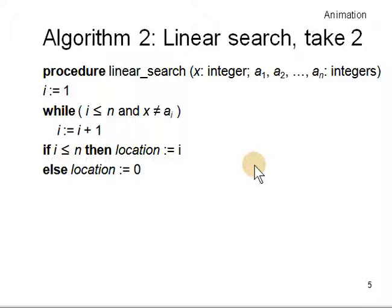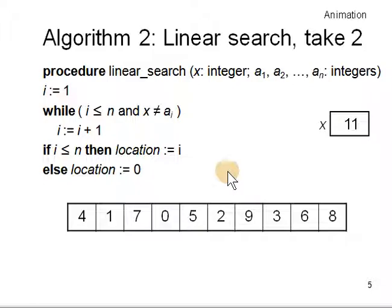And the same thing again with another array in which case 11 is not in the array. X is 11 and a1 to an, 11 is not there. So you will go from here till n. You will have to cover the whole array and then finally say not found.